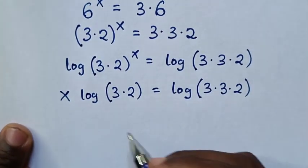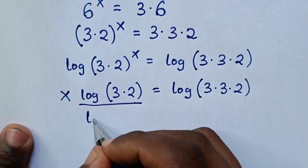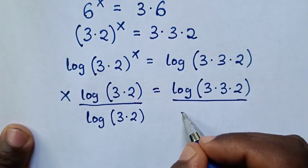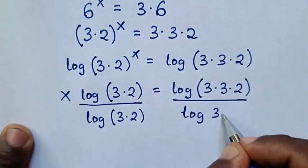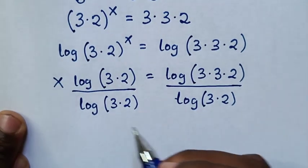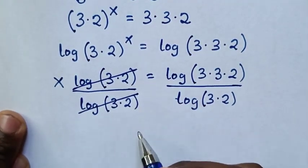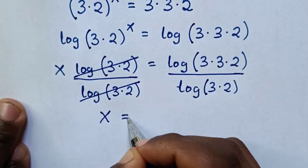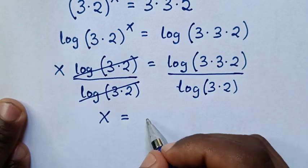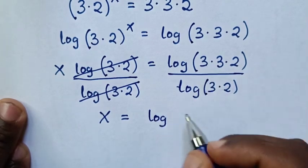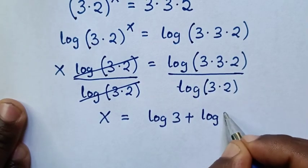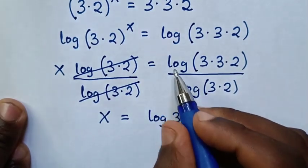Then in the next step, we will divide by log of bracket 3 times 2 on both sides. So this log of 3 times 2 will cancel, and it will be x is equal to log of 3 times 3 times 2, which is the same as log of 3 plus log of 3 plus log of 2.